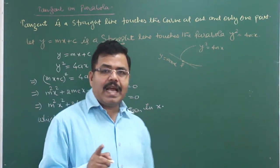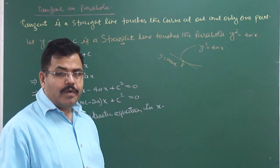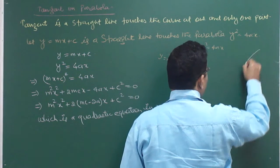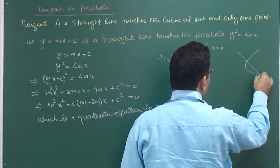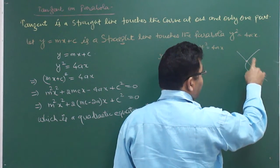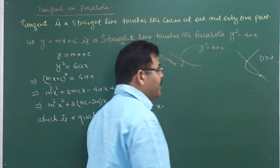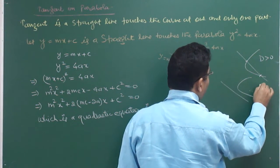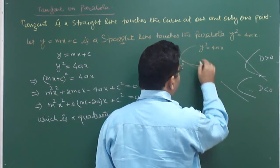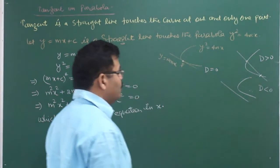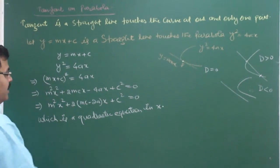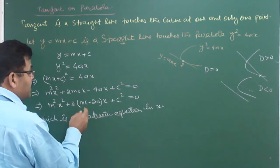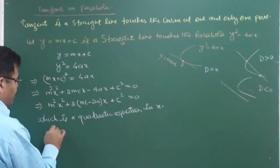A quadratic equation has two roots which can be real and distinct, real and equal, or no real roots. If the equation has two distinct real roots, the line intersects the parabola at two different points. If D is less than zero, the line does not intersect the parabola at all. And if D equals zero, the parabola and line have only one common point. So for one common point, the discriminant of this quadratic equation must equal zero.